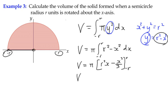So if we substitute in our limits, we're going to have r in the first bracket and negative r in the second, so we've got r² times r minus r³ over 3, minus r² times negative r minus negative r³ over 3.